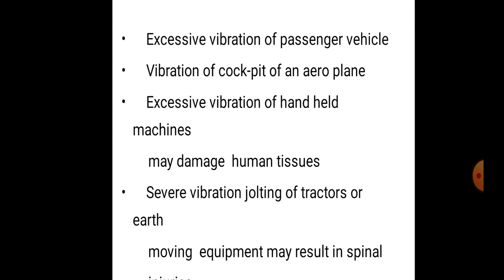Excessive vibrations in passenger vehicles, cockpit vibrations in aeroplanes, and excessive vibrations of hand-held machines may damage human tissues. Jolting from tractors or earth-moving equipment may result in spinal cord damage. These are examples of harmful effects of vibrations.